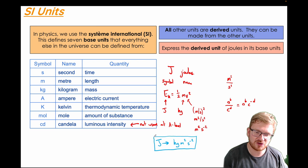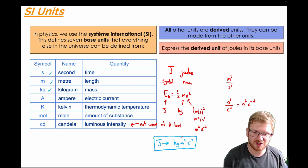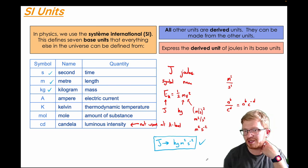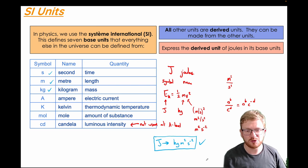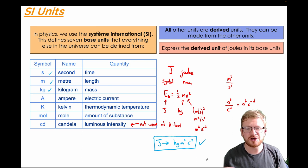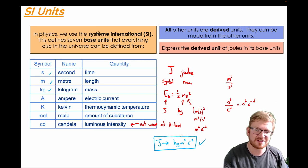So my final answer is that joules are exactly the same as kilograms multiplied by metres squared multiplied by seconds to the power of negative two. Looking at the right-hand side, I've got just kilograms, metres, and seconds — nothing that isn't on my base unit list. So one joule of energy equals one kilogram metre squared per second squared. You will always be able to take any unit and work out what it is in base units, and we'll do that as practice in our lessons.